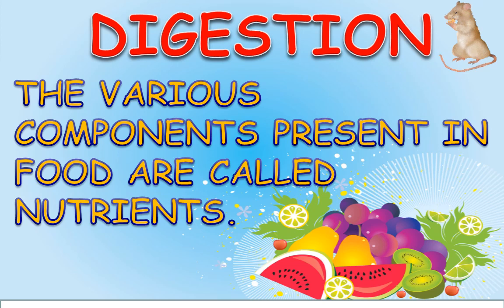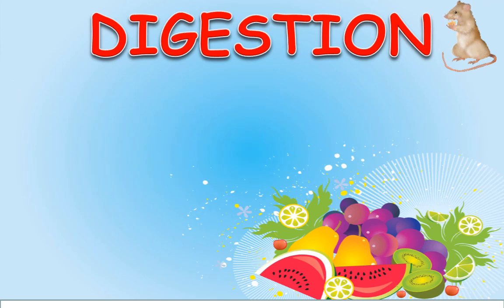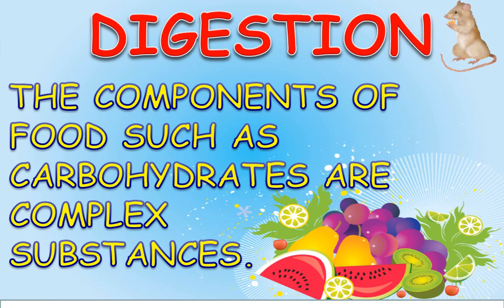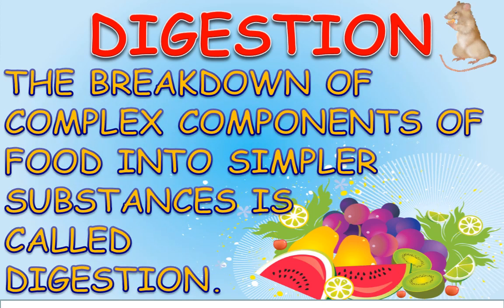You have studied in class 6 that food consists of many components which are known as nutrients. Try to recall and list them: carbohydrates, fats, proteins, vitamins, minerals. The components of food such as carbohydrates are complex substances. These complex substances cannot be used as such, so they are broken down into simpler substances.